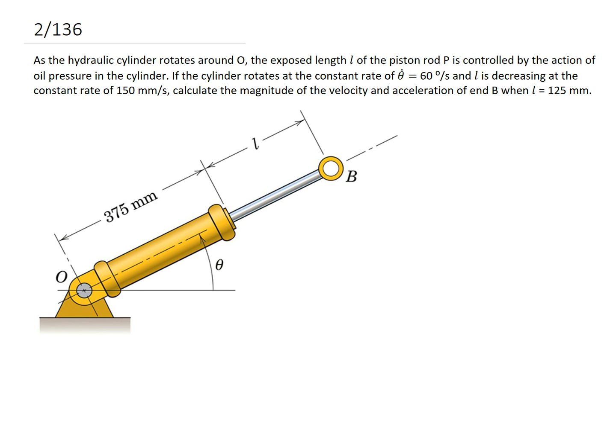So question 2-136. As the hydraulic cylinder rotates about O, the exposed length L of the piston rod is controlled by the action of oil pressure in the cylinder. If the cylinder rotates at the constant rate of theta dot equals 60 degrees per second, and L is decreasing at the constant rate of 150 mm per second, calculate the magnitude of the velocity and acceleration of end B when L equals 125 mm.